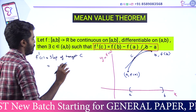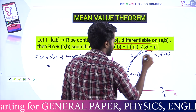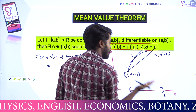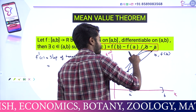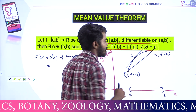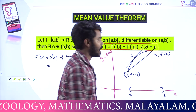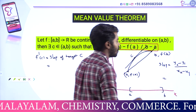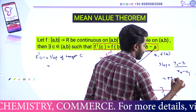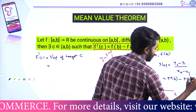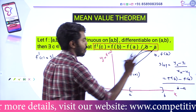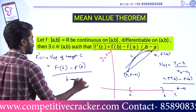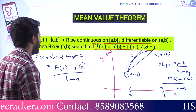What is the slope of the tangent? It is y2 minus y1 divided by x2 minus x1. Instead of y2 we write F of B, minus y1 which is F of A, all divided by x2 minus x1, that is B minus A. So the slope is F of B minus F of A divided by B minus A. That is F' of C equal to something.